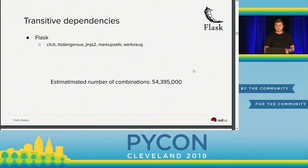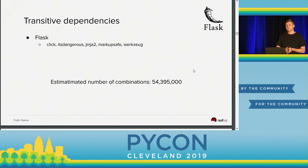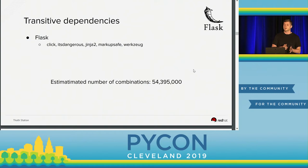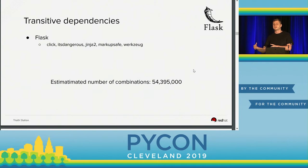Unfortunately, when you do pip install Flask, it's not just Flask that is being installed — there are also dependencies of Flask. These dependencies are either direct or indirect, and I will refer to them as transitive dependencies. So Flask depends on Click, itsdangerous, Jinja2, MarkupSafe, Werkzeug — either directly or indirectly. I did a rough estimate and there are at least 54 million combinations of how you can install Flask with its dependencies, meaning any Flask version with any dependency version given the version range specification. The actual number varies based on dependency graph traversal.